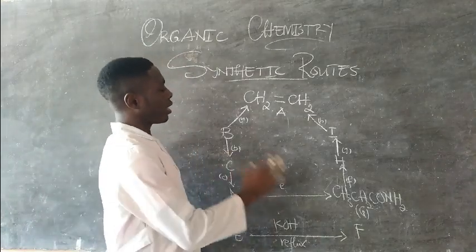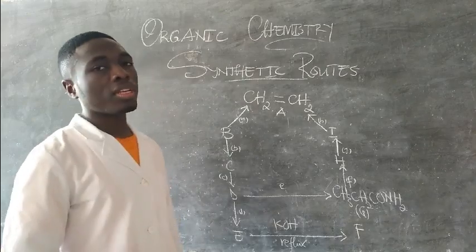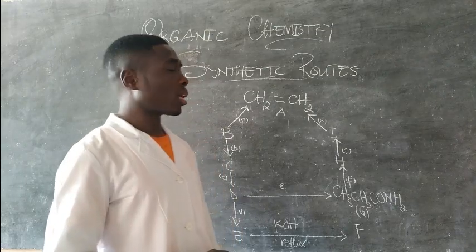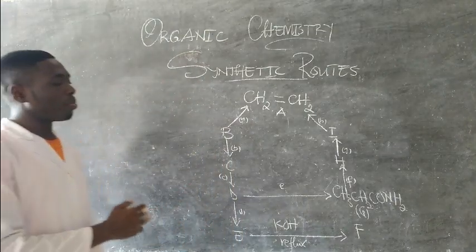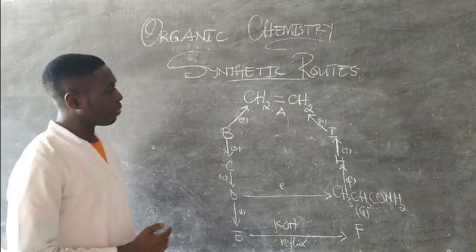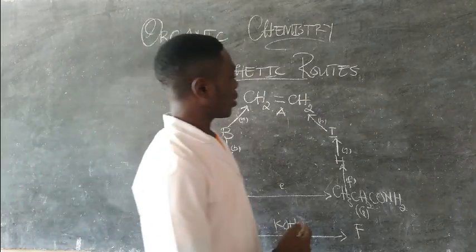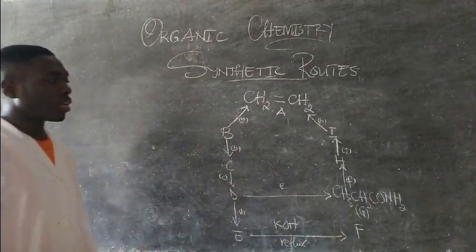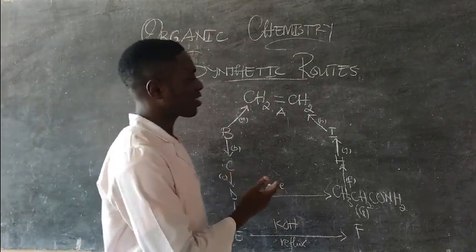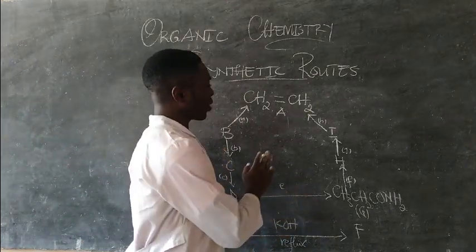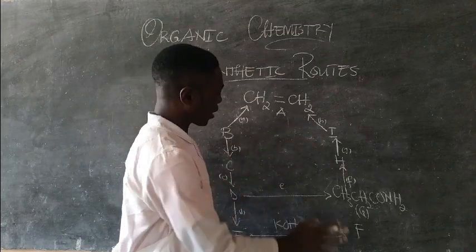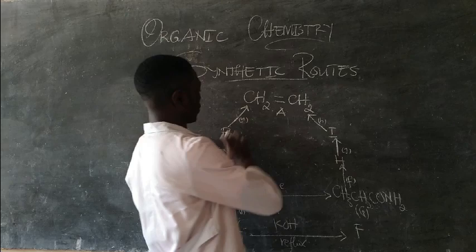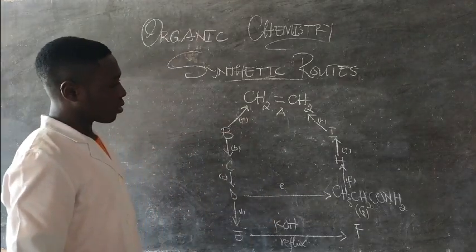Let's try to analyze a synthetic route that came in November 2011. You might just look at it and you have been given just three compounds — just the structure of three compounds in the whole synthetic route. And you might think, what am I going to do with this? Because you have a lot of compounds and a lot of letters everywhere, and you've just been given three compounds.